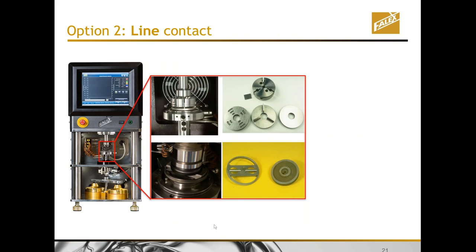A second large and very important group of contacts in industry are line contacts. Line contacts occur in many more components and applications than pure sliding point contact, mainly because load is distributed over a larger area, making contact pressures more moderate. When you have inhomogeneous materials, a line contact also distributes the tribological contact over a larger area, averaging the properties of different phases or components of a surface.